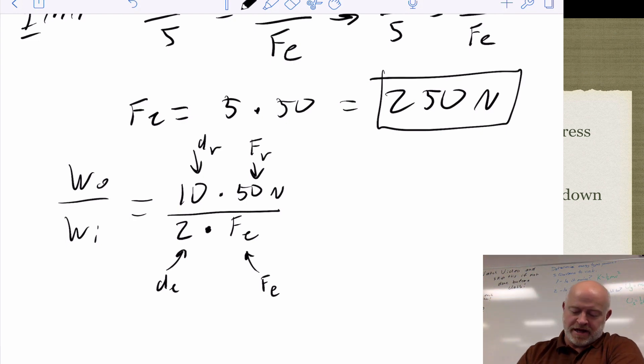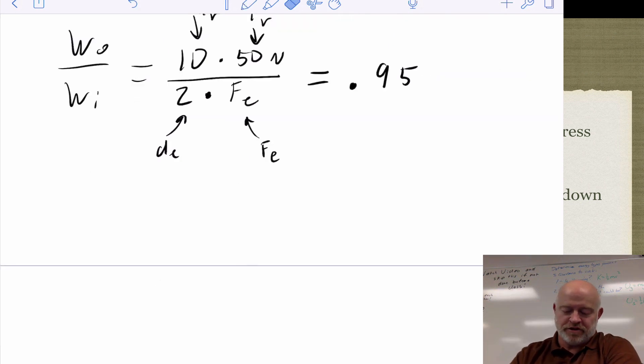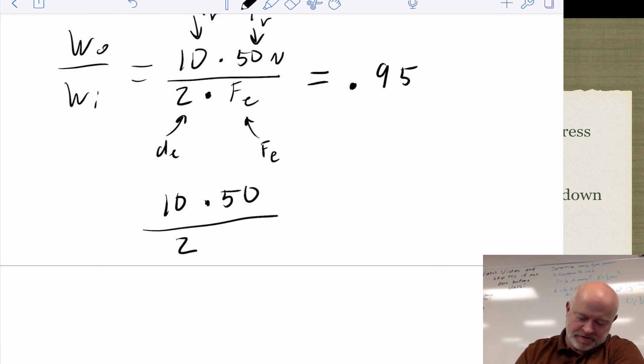So plug the numbers in, and now this has to equal our efficiency. So our efficiency here is 95% efficient, or it's 0.95. So now we just solve this. So here's our setup. So first I want to get that force of effort out of that denominator. So what I'm going to do is I'm going to say that 10 times my 50 divided by 2 divided by 0.95 will equal my force of effort.